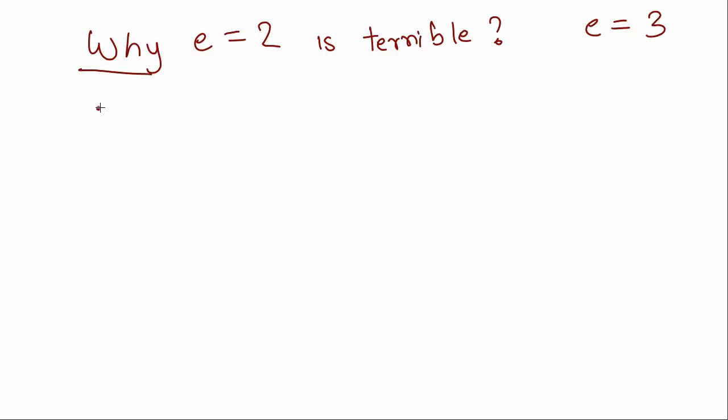So this would be because we know that the GCD of e and (p-1)(q-1) is 1. This has to be the case because otherwise we cannot find d, which is e inverse mod (p-1)(q-1).